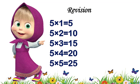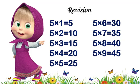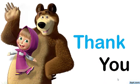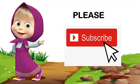5 sixes are 30, 5 sevens are 35, 5 eights are 40, 5 nines are 45, 5 tens are 50. Thank you children! If you enjoyed this video, please give it a like, share this video, and subscribe to our channel. Bye!